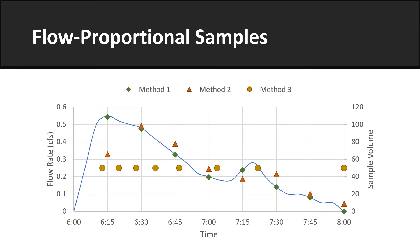The following graph displays each of the flow-proportional composite sampling methods. Method 1 can be seen with the green markers, where at equal time increments a sample is collected whose volume is proportional to the flow rate when it was collected. Method 2 is displayed by the orange markers: aliquots are collected at equal time increments, but the volume of the aliquot is proportional to the volume of flow since the previous aliquot — or proportional to the area under the curve between samples. Method 3 shows the constant volume technique, where the sample volume of each aliquot is the same, but the time it is taken is set such that there is an equal volume of flow between each of the aliquots.